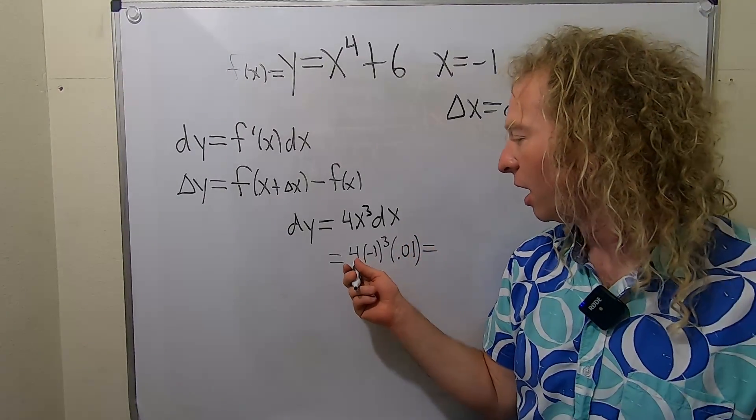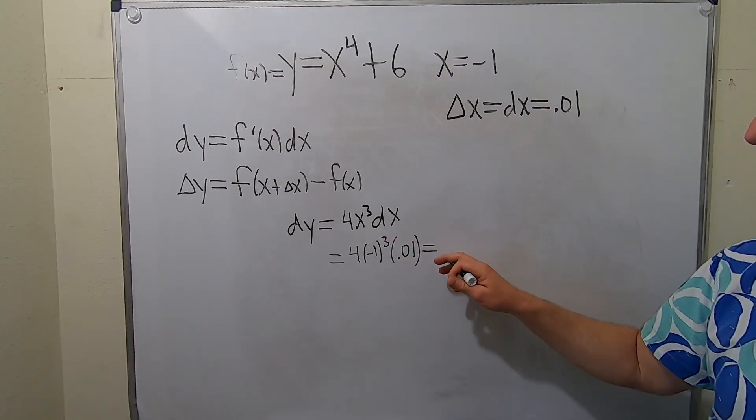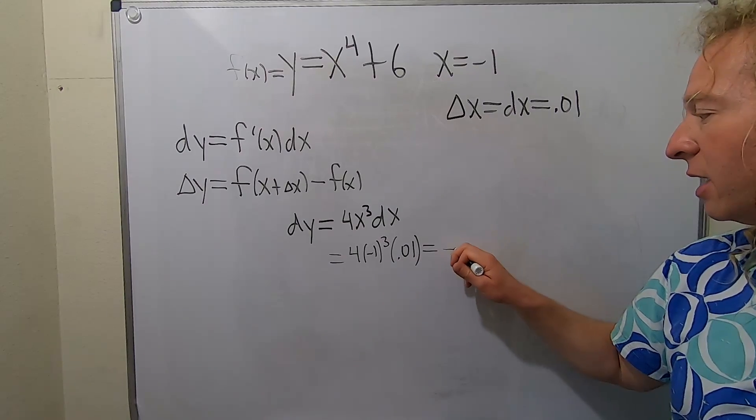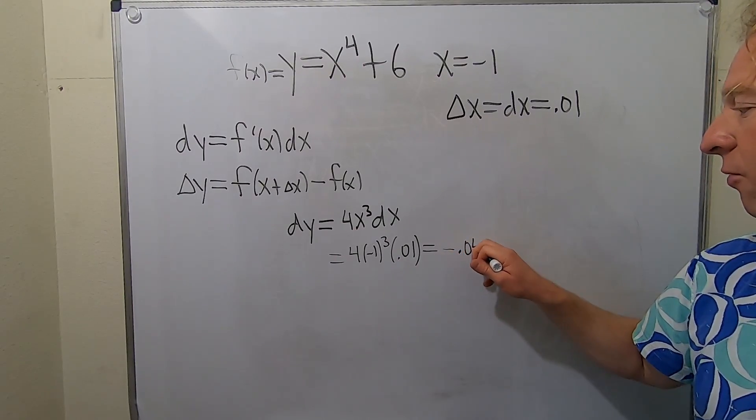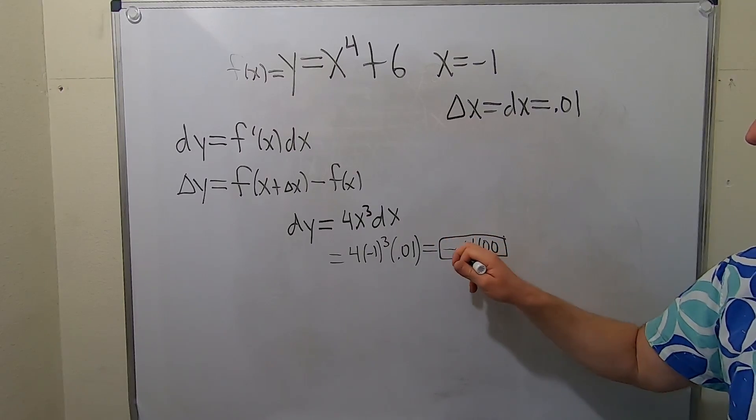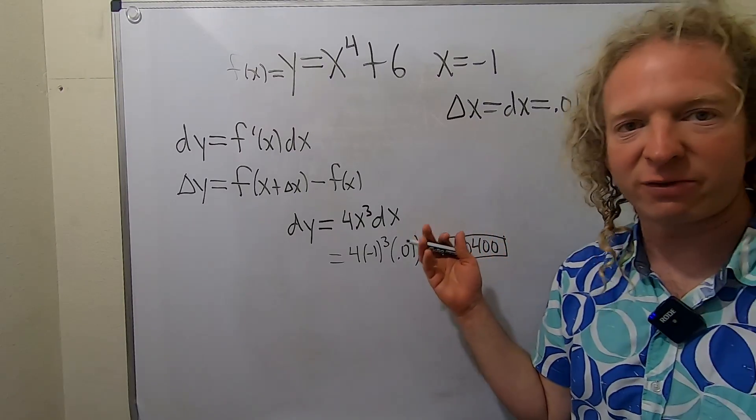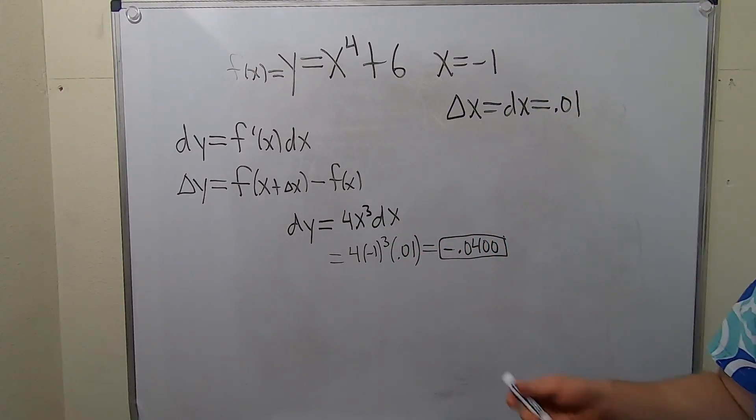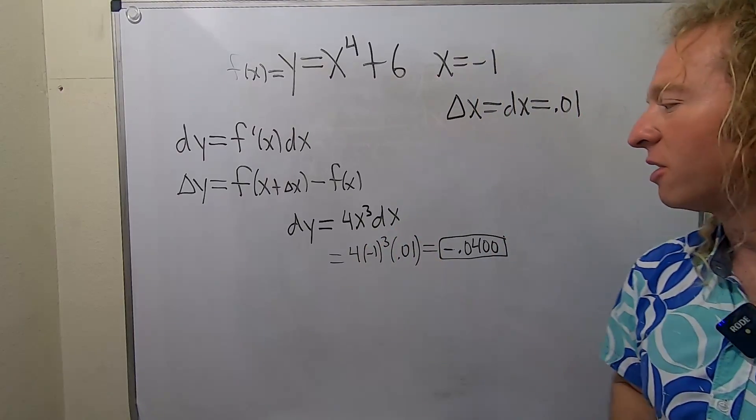This equals negative 4 times 0.01, which is negative 0.0400. I'm using four decimals because most problems ask for four decimals. That's our dy.